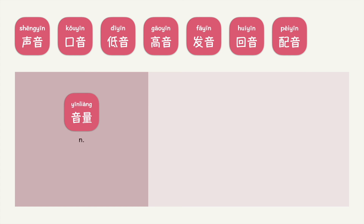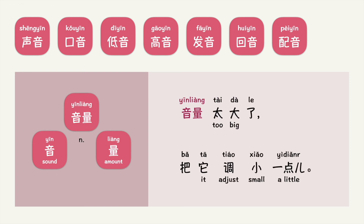音量. 音量 is a noun. 音 is sound, 量 means amount. Put into context, you can say: 音量太大了，把它调小一点。 Sound amount — what do you think 音量 means? 音量 refers to volume.